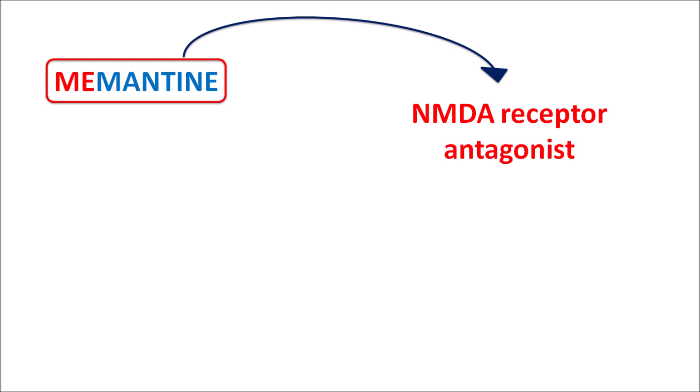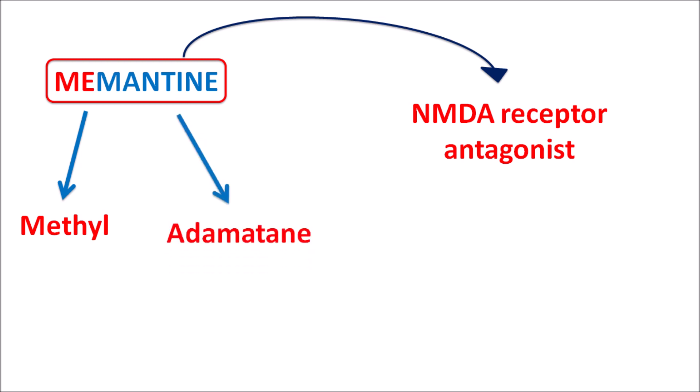Within the name Memantine we can identify two structural features. The prefix 'Me' indicates that it has methyl groups, and the suffix 'Mantine' indicates it has an adamantane nucleus. So Memantine is a methyl-substituted adamantane derivative.